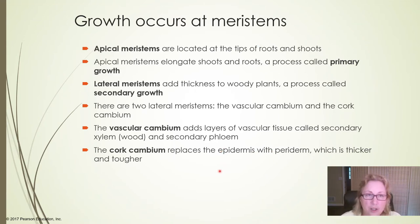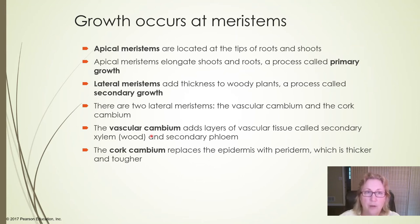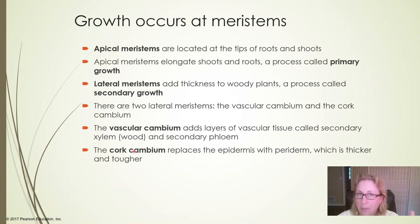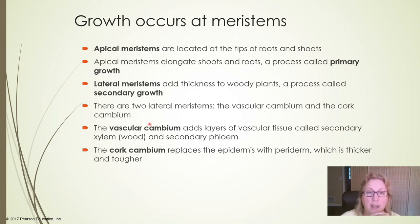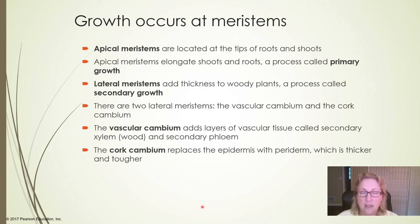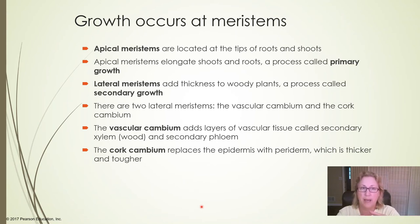Growth in plants occurs at meristems — think of them like stem cells, similar to those in animal bone marrow. We find them in the apical meristems and lateral meristems. Apical meristems are at the tips of shoots and roots, where cells dividing by mitosis increase the length of roots and shoots — this is called primary growth. Lateral meristems are found in woody plants and add thickness, which is called secondary growth. In a young tree sapling, it's both getting longer by primary growth and thicker by secondary growth.